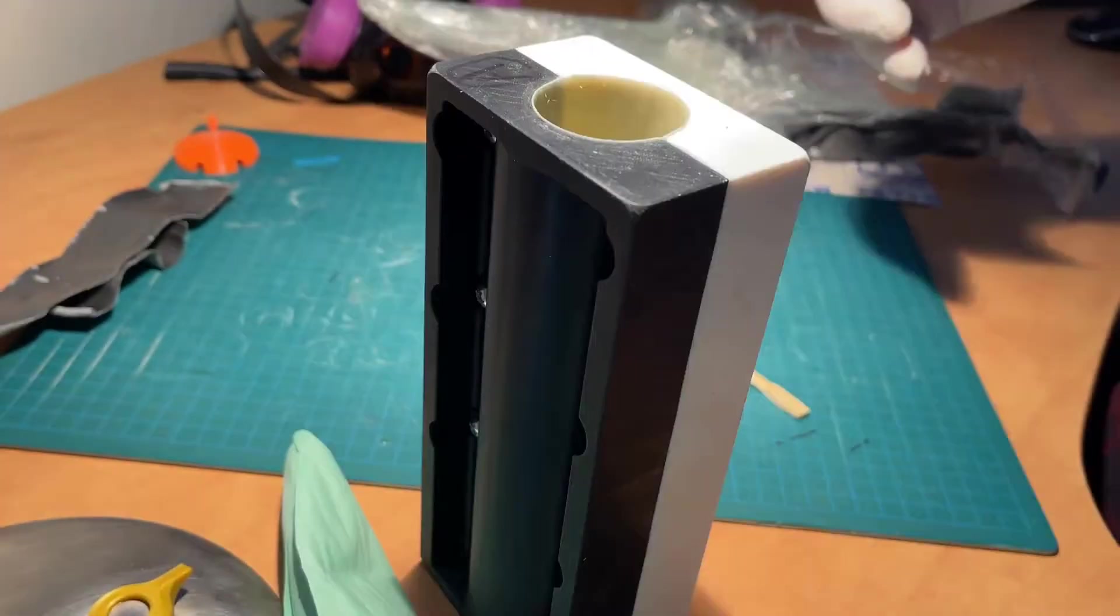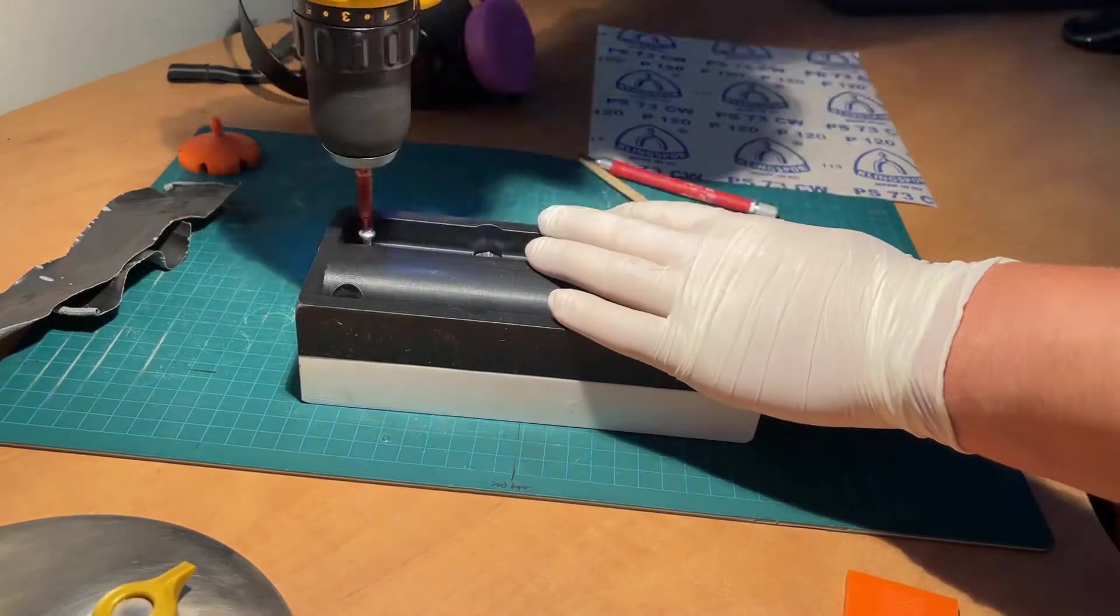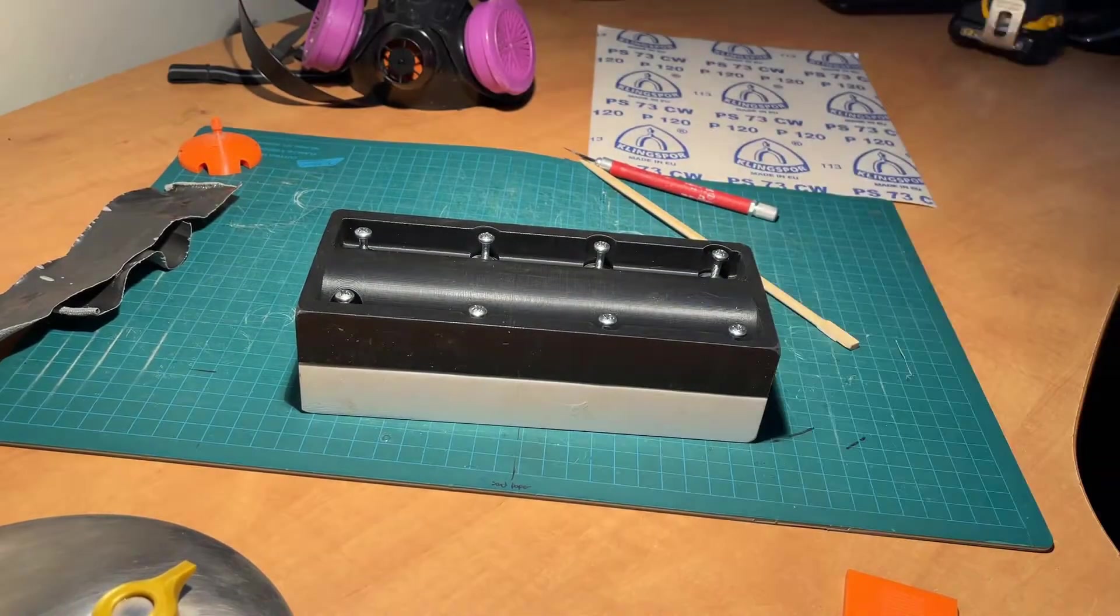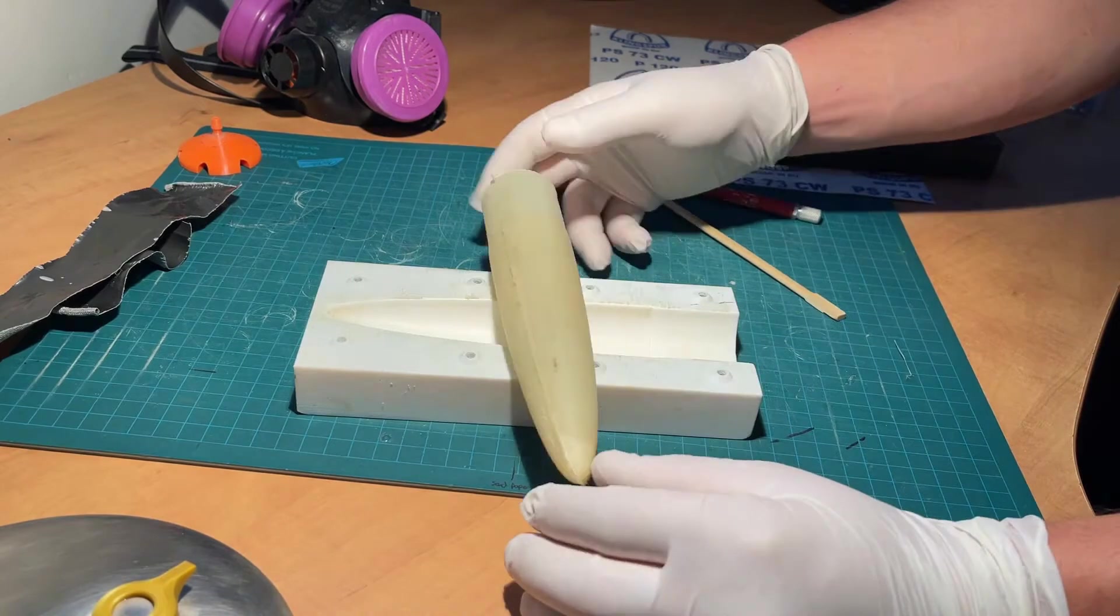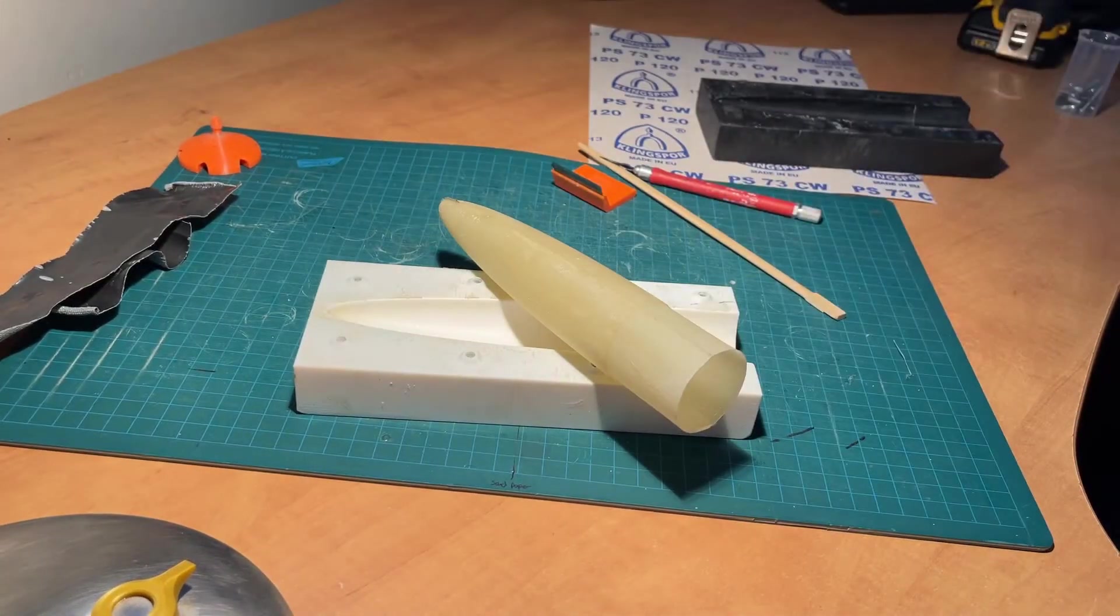If some fiberglass has cured to the top, like in this layup, the angled knife can once again be used to trim it flush with the mold. The mold can then be unscrewed and cracked open with a flat edge if necessary, but in this layup it just popped apart.